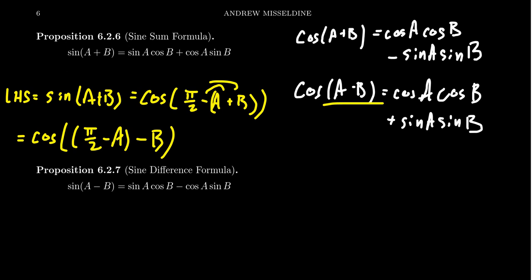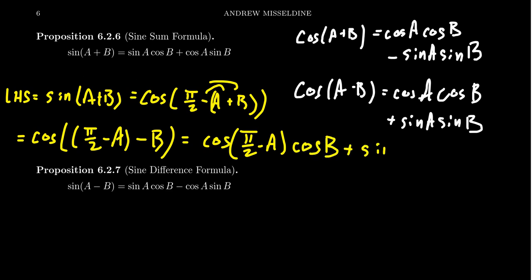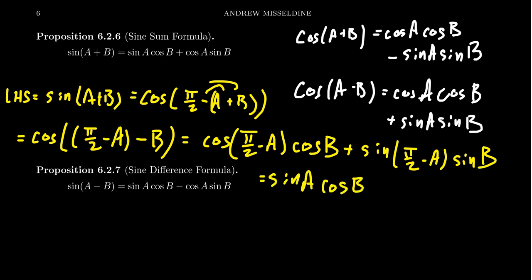Now we can use the angle difference identity, because after all we're subtracting b. Applying it, we get cosine of pi halves minus a times cosine of b, plus sine of pi halves minus a times sine of b. Then, by the co-function theorem, cosine of pi halves minus a is just sine of a.